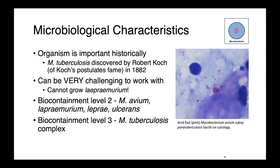These bacteria can be very challenging to work with — many of them are slow growing, and some species actually can't be grown at all. Mycobacterium lepromarium has never been cultivated. Some bacteria within this genus, like mycobacterium avium, lepromarium, leprae, and ulcerans are biocontainment level 2, while the mycobacterium tuberculosis complex are all biocontainment level 3.